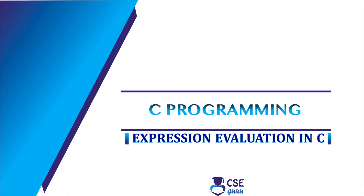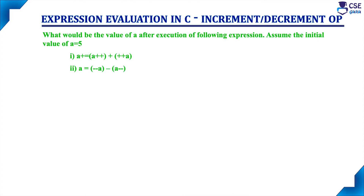Welcome to CSI Guru. In this session, we will discuss expression evaluation in C. We will solve expressions based on the increment and decrement operator. What would be the value of A after execution of the following expression? Assume the initial value of A is 5.